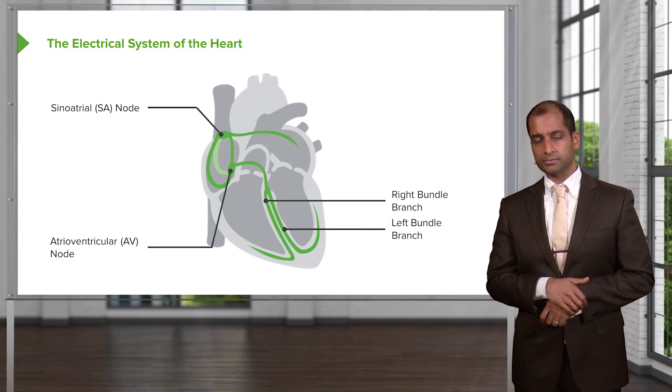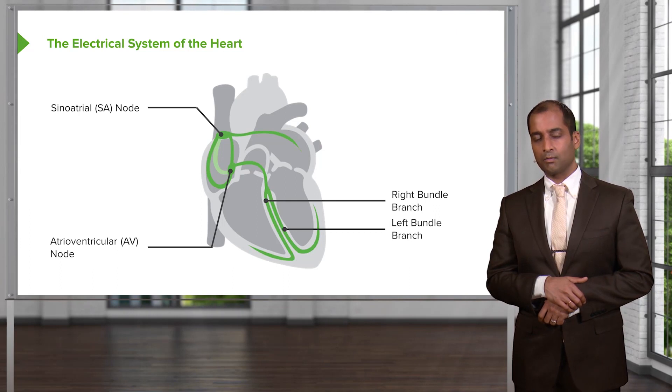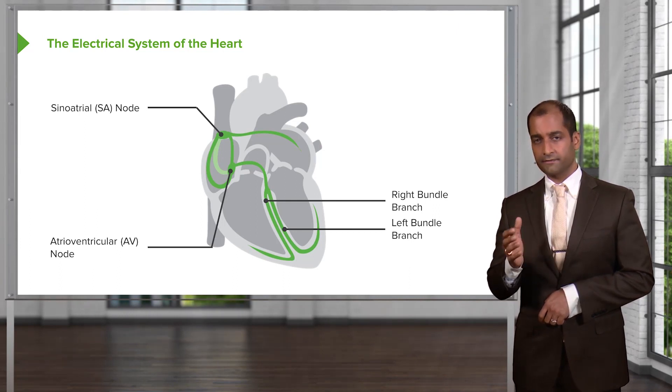What if it was a right bundle branch block? Is it a fixed split or widened split? Widened split. If you don't know the difference, that's okay. It's a lot of information.